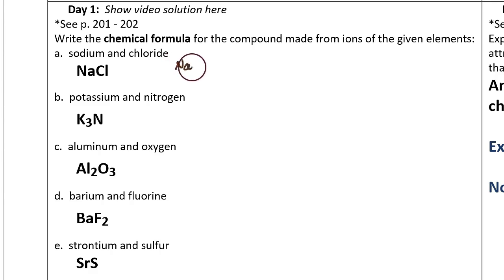Sodium makes an ion with a positive one charge. Chloride is an ion with a negative one charge. When positive and negative ions bond together, the charges have to cancel out and create a neutral compound.